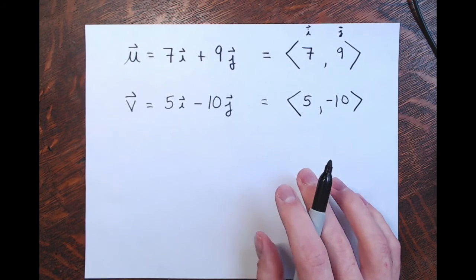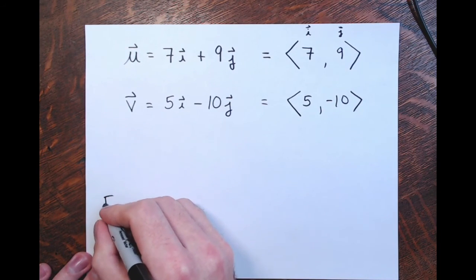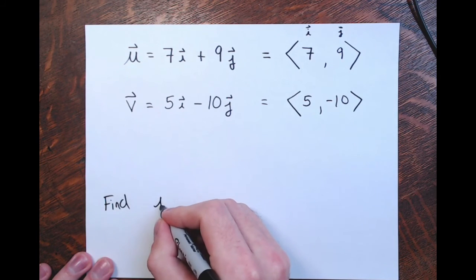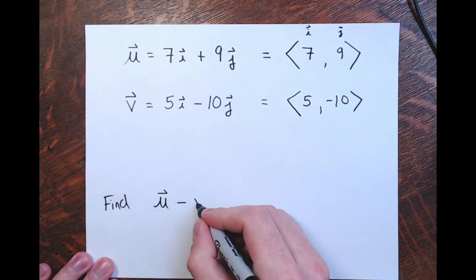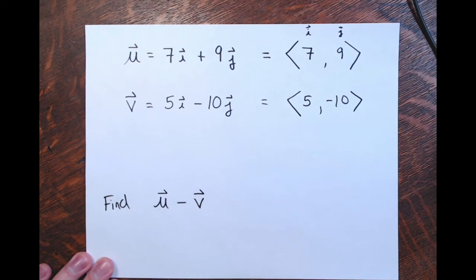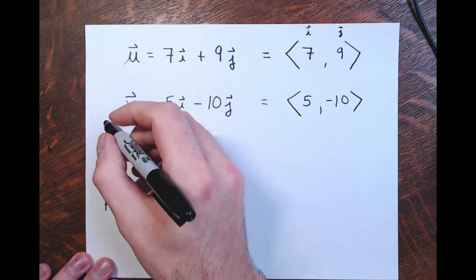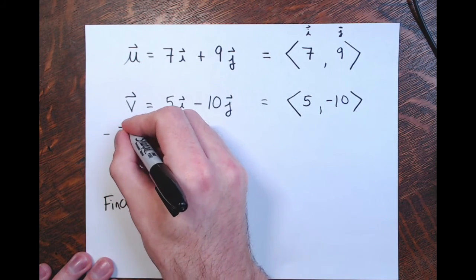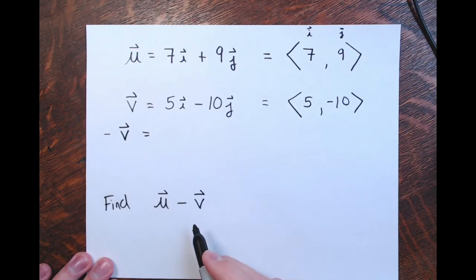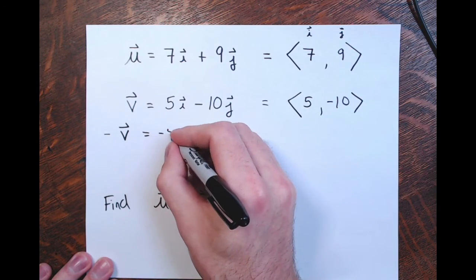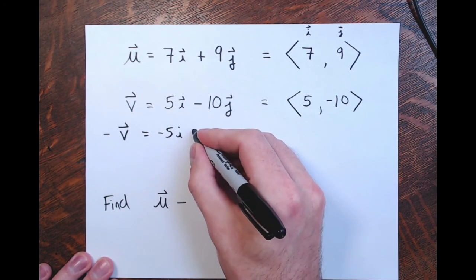Now they're asking us to find u minus v. Well, minus v—this is just multiplying this by negative one, so I'd have negative 5i plus 10j.